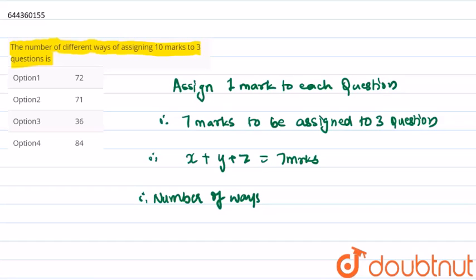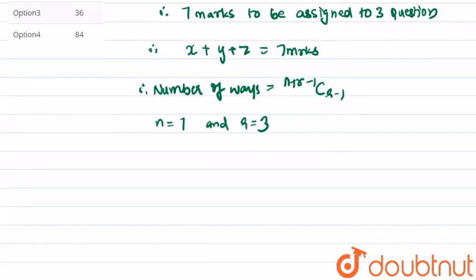That an addition of three numbers should be seven marks is n plus r minus one C r minus one, where n is seven and r is equal to three, as sum of three numbers should be equal to seven.